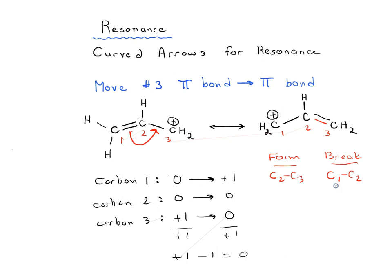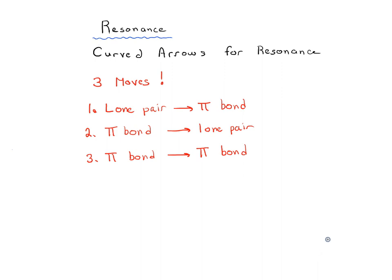Every resonance form you can draw will be a combination of these three moves: lone pair to pi bond, pi bond to lone pair, and pi bond to pi bond. They show the breaking and forming of bonds and where the charges go. Keeping track of electron flow is one of the key things in reactions — electrons are the currency of chemistry, and curved arrows are the accounting system we use to track how they move.